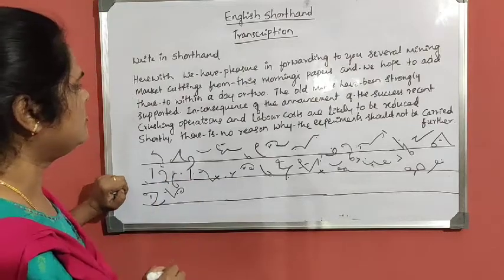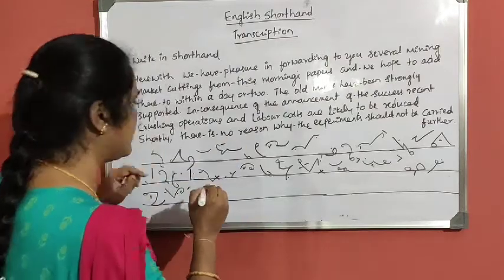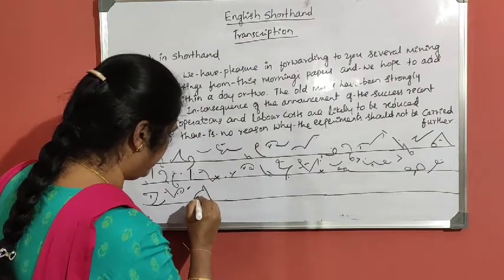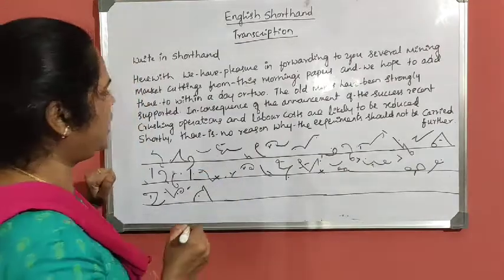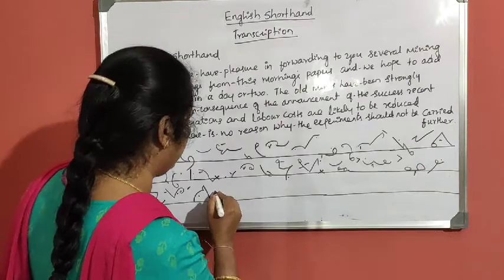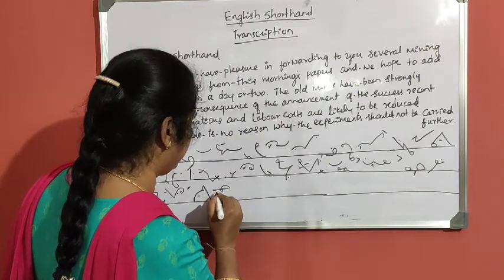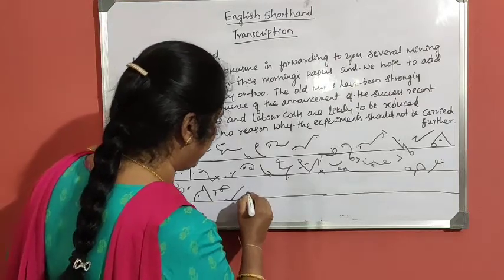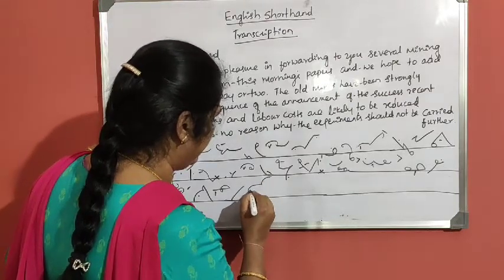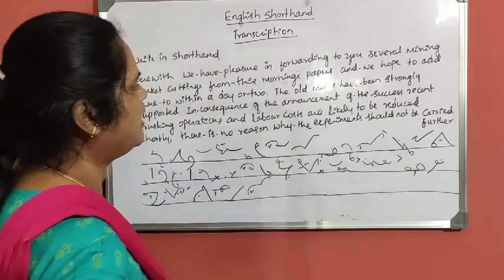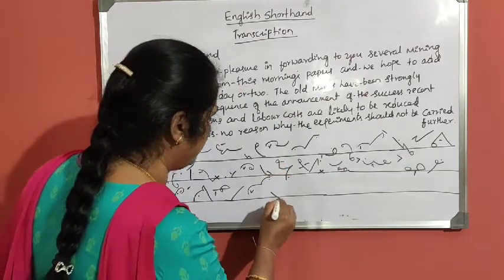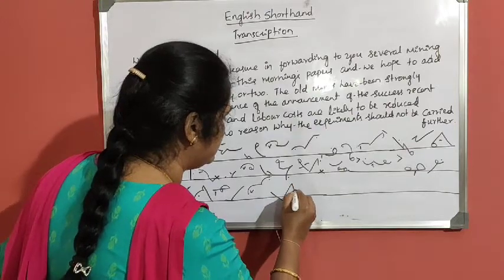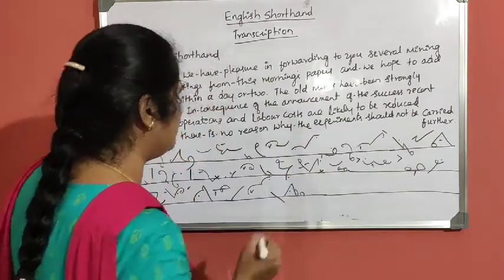Then 'and' — 'and' is grammar log. Labour costs: L bar, A oval — labour. Costs: K, ST loop, and S — costs. R — grammar log. Lightly: L, K, L — lightly, lightly. To be — grammar log. Reduced: R, D, ST loop — reduced.